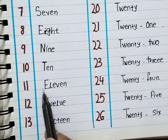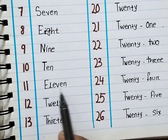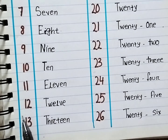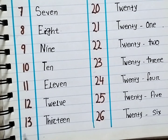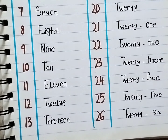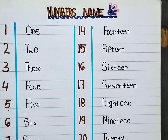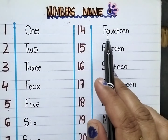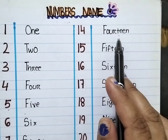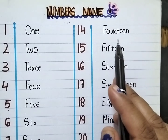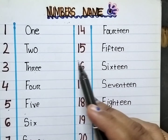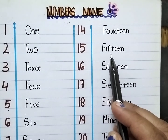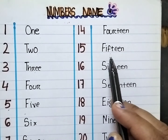11. E-L-E-V-E-N 11. 12. T-W-E-L-V-E 12. 13. T-H-I-R-T-E-E-N 13. 14. F-O-U-R-T-E-E-N 14. 15. F-I-F-T-E-E-N 15.